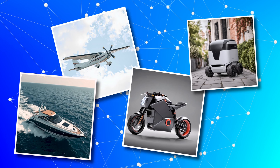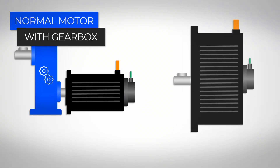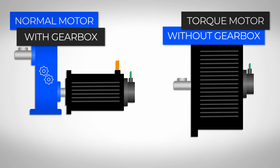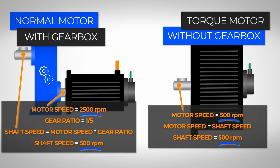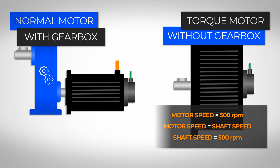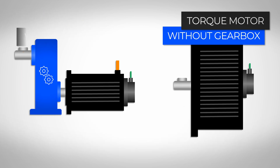It is also beneficial for electric motorcycles and mobile robots. However, high torque motors without a gearbox are usually larger than electric motors with a gearbox, because high torque motors normally operate at lower speeds. Due to the lower speeds, high torque motors also often have a lower power density.